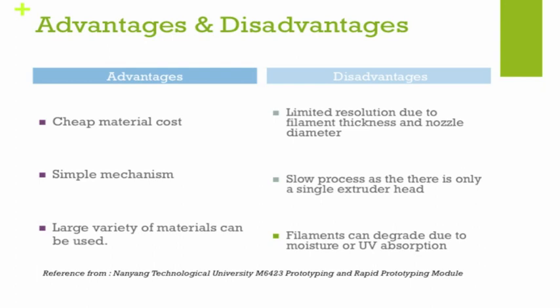Moving on to the advantages of FDM: the process generally has very cheap material costs, and in the future this may decrease further as developers work on FDM printers compatible with pellet materials, which are very common in plastic injection molding. Another advantage is that FDM uses a very simple mechanism, which has allowed many consumer companies to replicate it easily. Additionally, FDM has been around for a very long time and, due to its simple mechanism, a large variety of materials can be used.